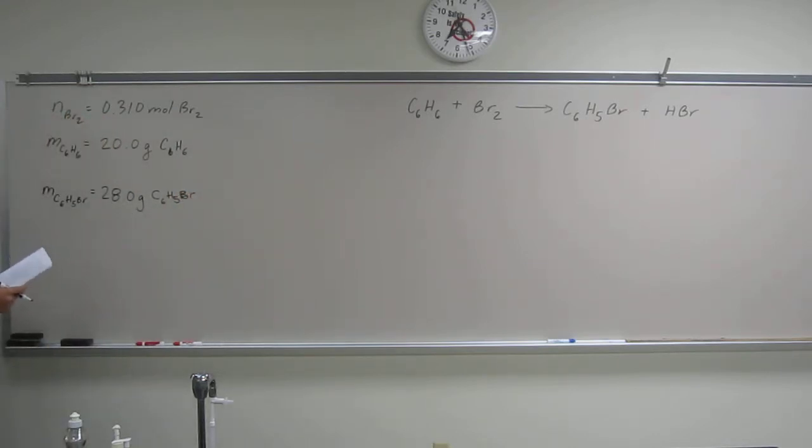Okay, so the first thing we're going to have to do is convert both of these things to moles eventually. But once we do that, we're going to compare this one and this one to see which one's the limiting reagent. And then we're going to compare the number of moles of that to the number of moles of this and see the percent yield. So are we all cool with that?